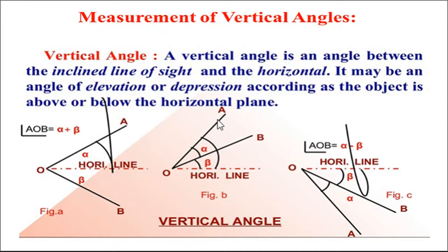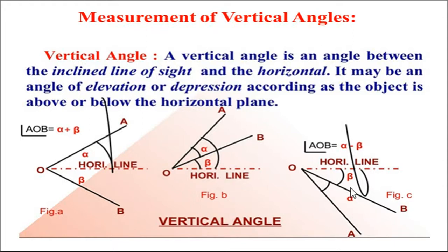Sometimes there may be two points above the horizontal line of sight, say A and B. Then alpha is called angle of elevation, and beta is also angle of elevation. Similarly, when both points are below the horizontal line of sight, both alpha and beta are angles of depression.